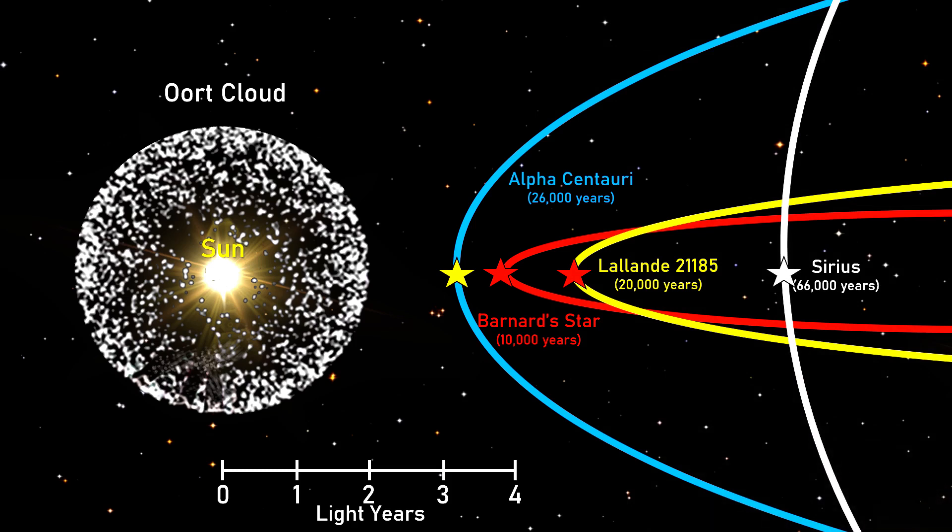Finally, at Gliese 710, much later than the other stars, but much closer than the 65 million years our Earth has passed since the dinosaurs' extinction event.